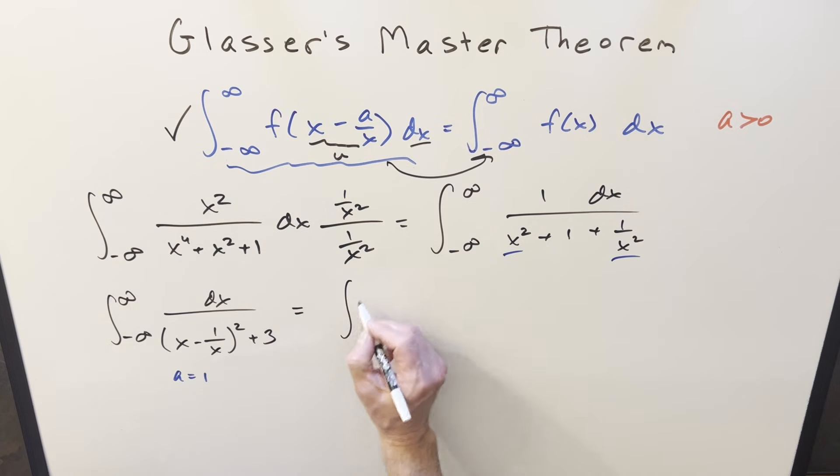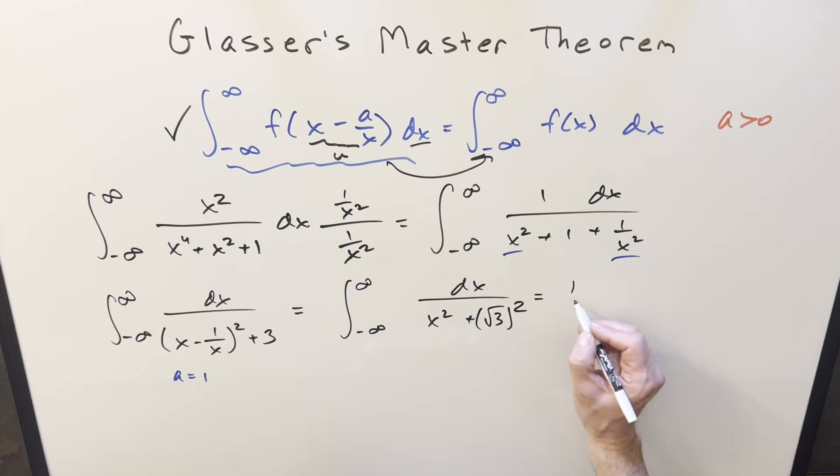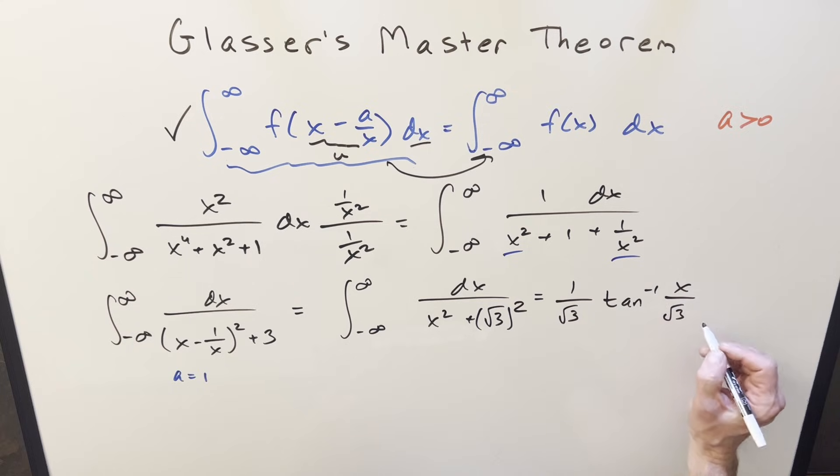So applying the formula, what's going to happen is this becomes the integral from minus infinity infinity of just dx over just x squared plus 3. I can write this as square root of 3 squared, just setting up the arctan formula on it. So then go ahead and integrate it with the formula. This is going to be 1 over square root of 3 arctan x over square root of 3 from minus infinity to infinity.